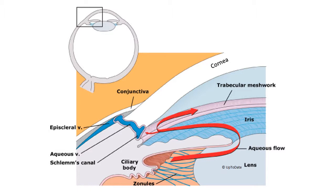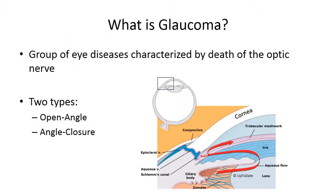Normal intraocular pressure is maintained by a careful equilibrium between aqueous production and drainage. Any disruption of this drainage can result in elevated intraocular pressure, which may compress the optic nerve and affect vision. With this anatomy in mind, we can now discuss glaucoma. Glaucoma is a group of eye diseases characterized by injury to the optic nerve, which may or may not be associated with elevated intraocular pressure, also called IOP. There are two main types: open-angle glaucoma and angle-closure glaucoma.